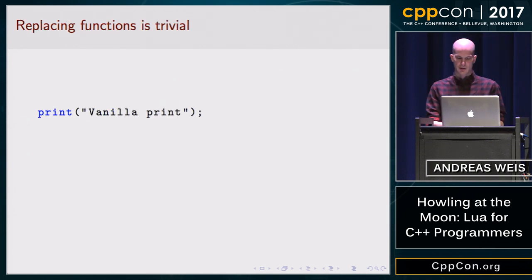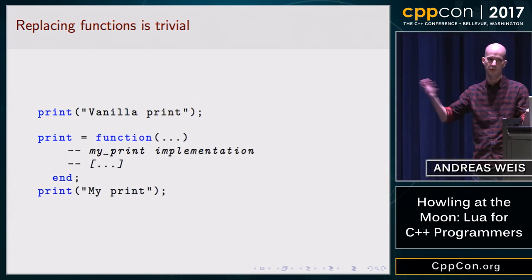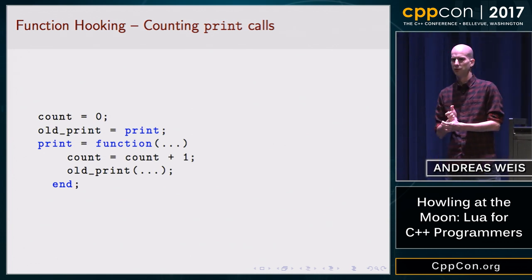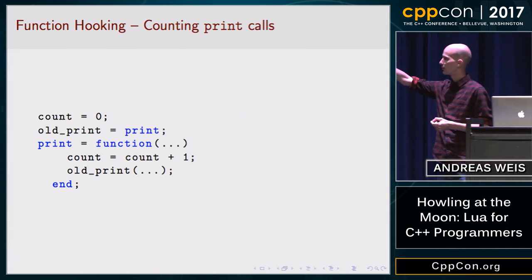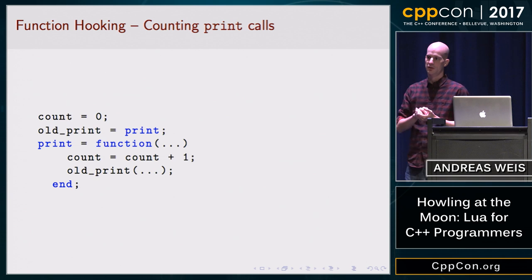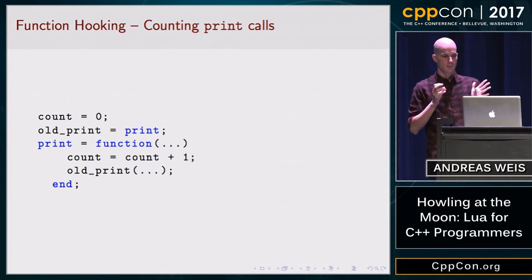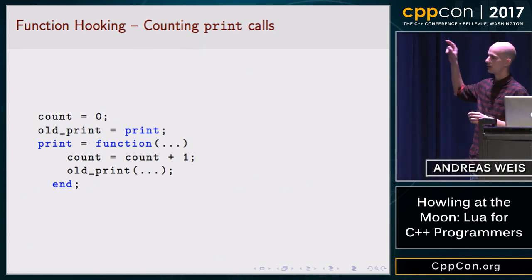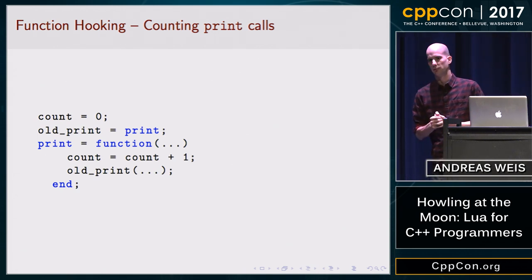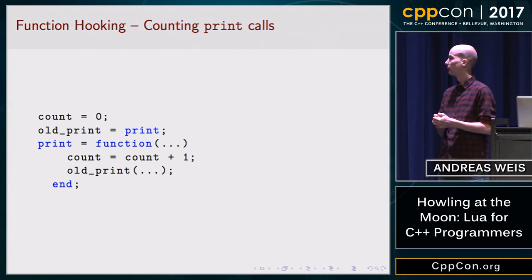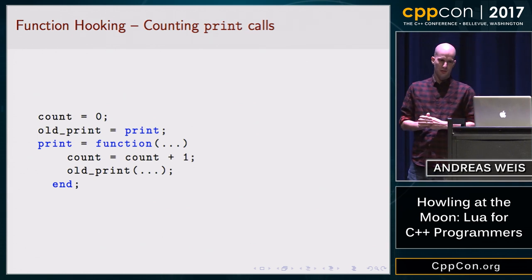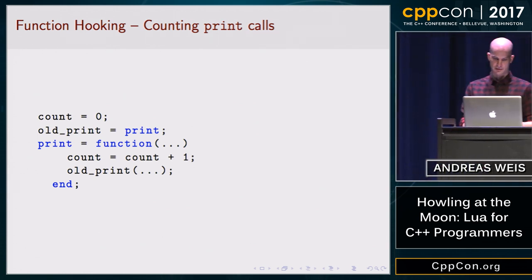So for example, let's say I'm not happy with the print function and I want to replace it with my own. I can just do that — it's just a value, I just assign a different function to it. Let's say I want to count the number of print calls. I just replace the vanilla print function with a new variadic function which increments a counter and then calls the original print function. You'll notice there are actually no variable declarations in this code — I just assign values directly to previously undeclared variables. This is something most scripting languages allow: if you assign to a new variable, it automatically creates a new global variable.